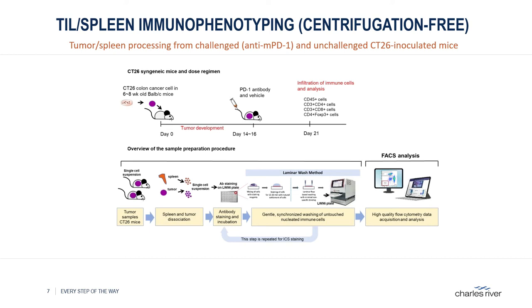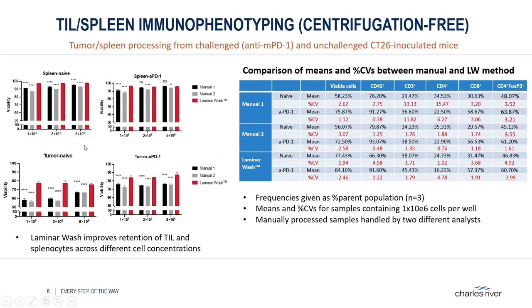For this pilot study, we kept the T cell staining panel simple, staining only for CD45, CD3, CD4, CD8, and FOXP3 to test intracellular staining. Spleen and tumors were in parallel dissociated, counted, and seeded at densities of one, two, and five million cells per well and washed by either conventional centrifugation or the laminar wash method prior to flow cytometric analysis. We found that splenocytes and TIL samples processed by laminar wash show higher viability and recovery in general. This trend is even clearer in the case of TIL samples.